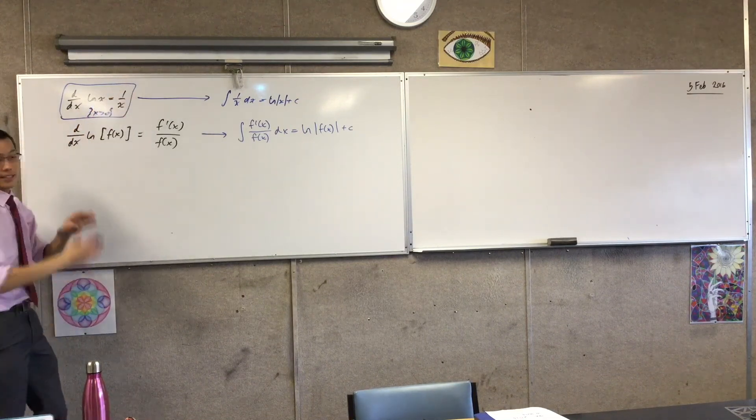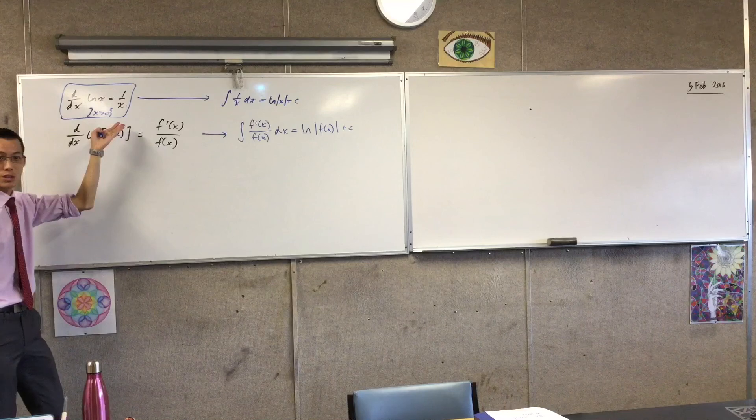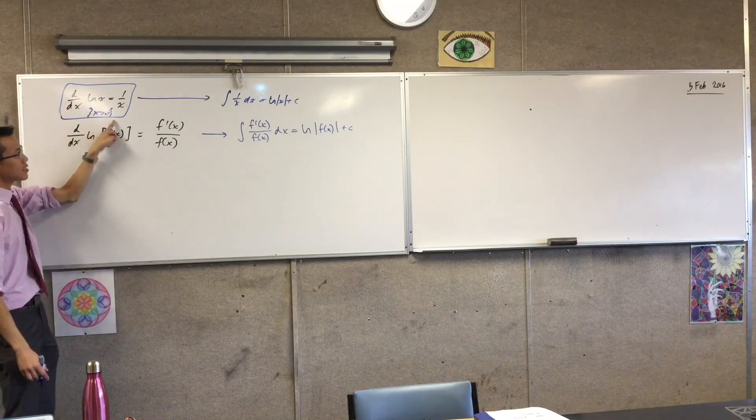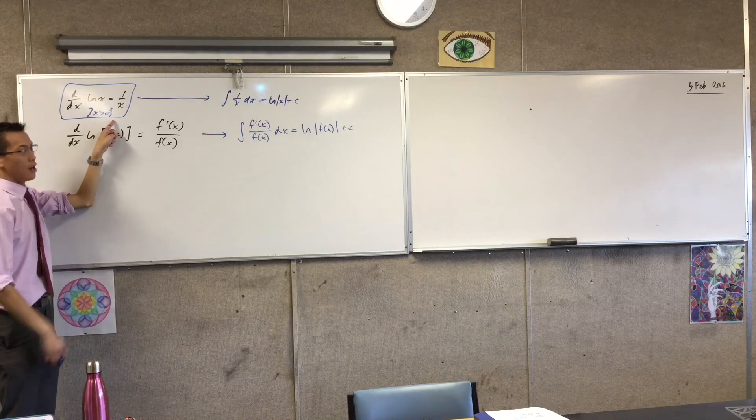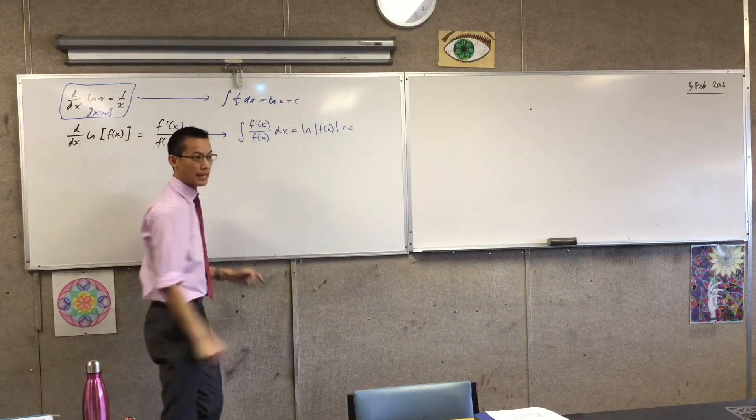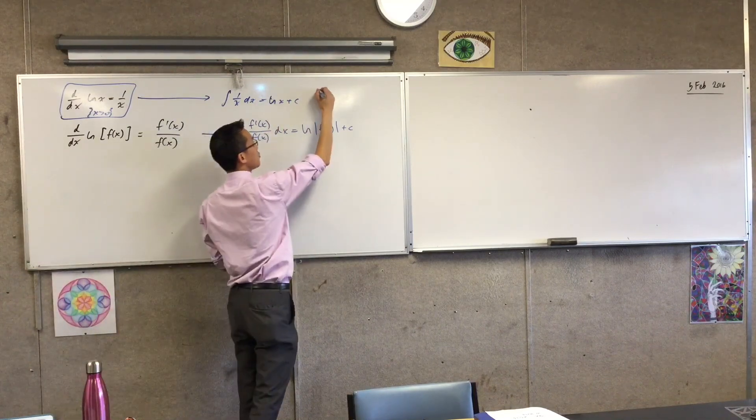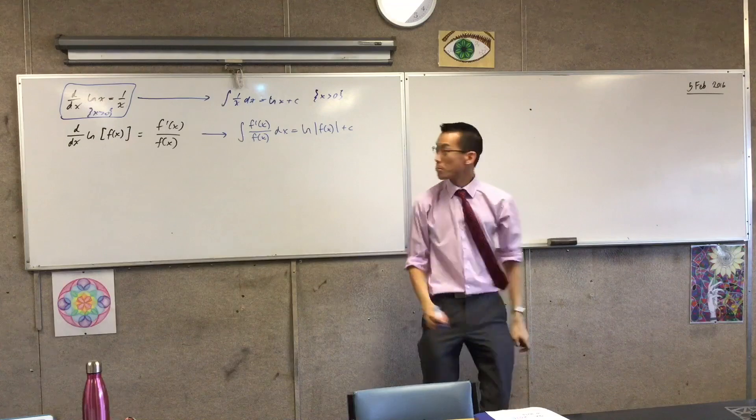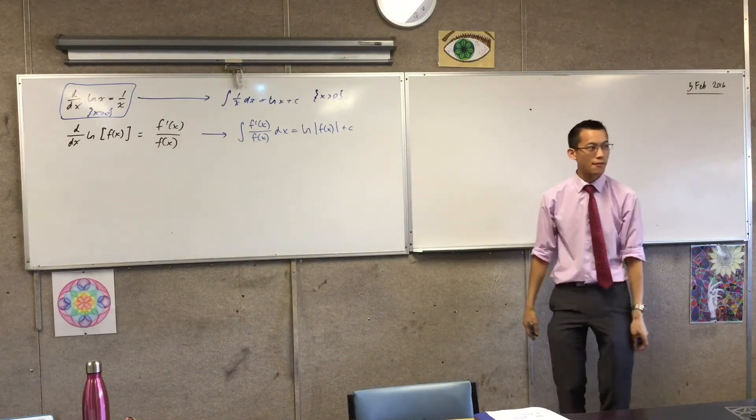Whereas 1 over x, it exists for everywhere except for x equals 0. It has its merry way over x is less than 0. So this statement is only true for x positive. Therefore, this, which is what I wrote down originally, is also only true for x positive. So it's kind of like, alright, now I have half the picture.